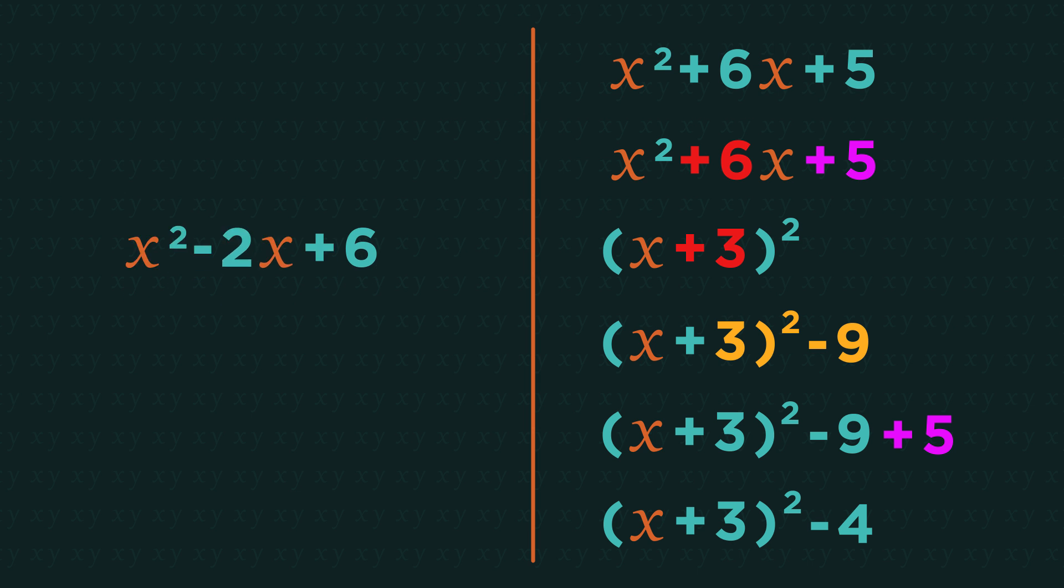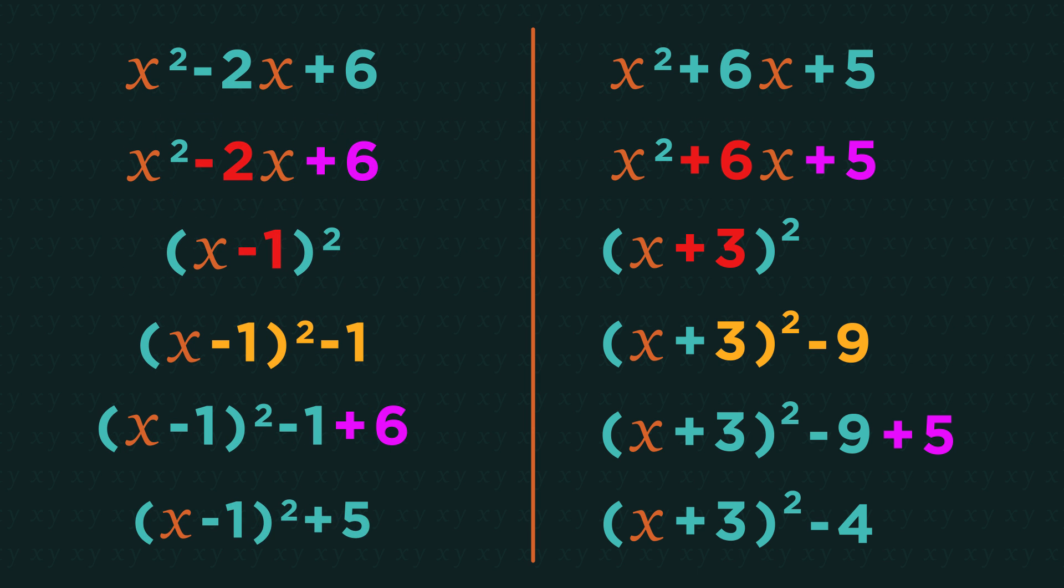Did you get it right? x minus 1 squared plus 5. So that is how we complete the square.